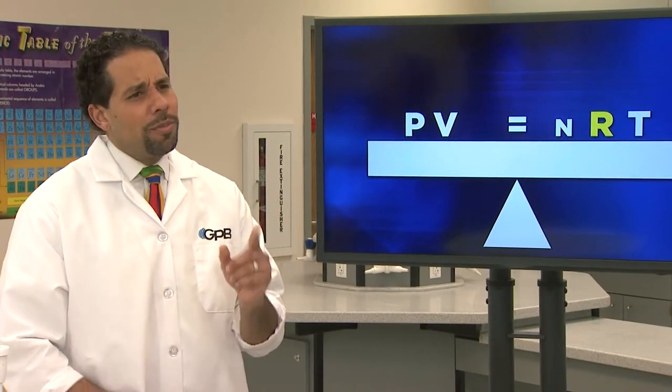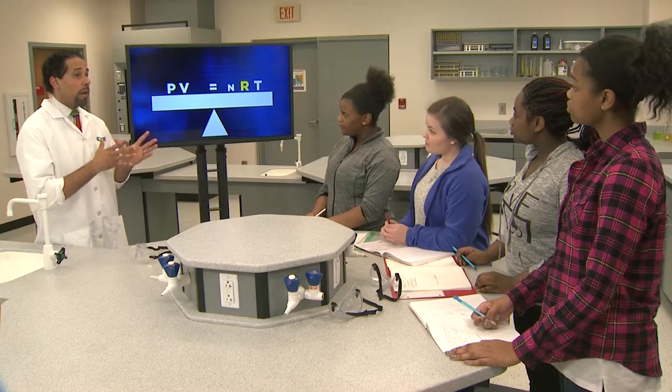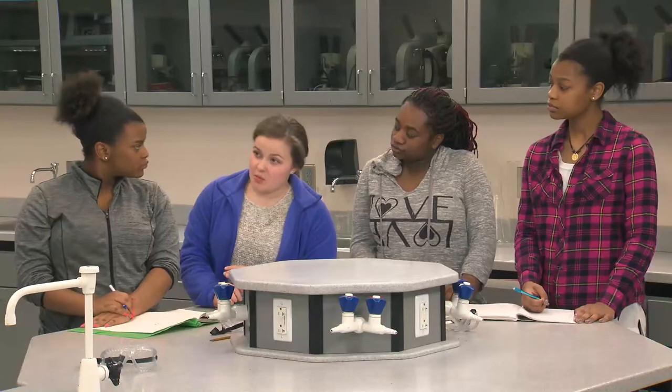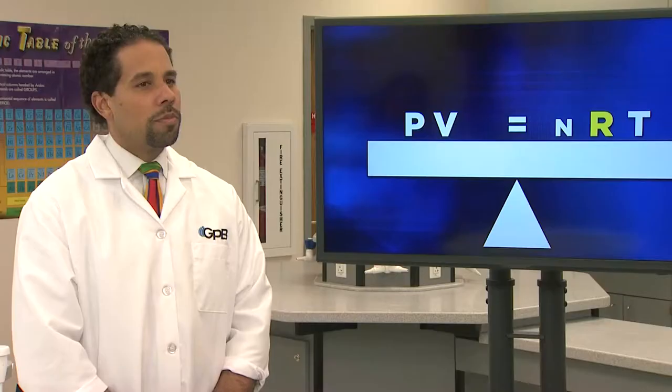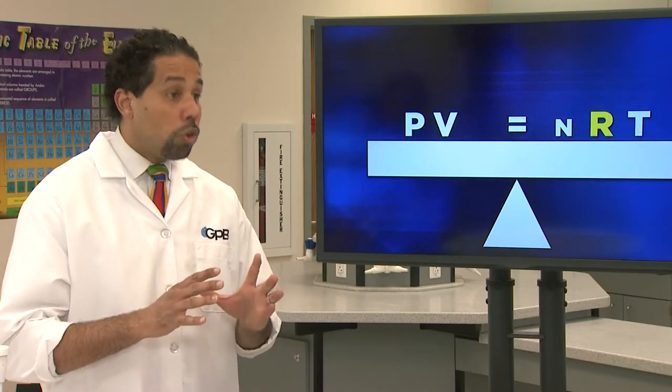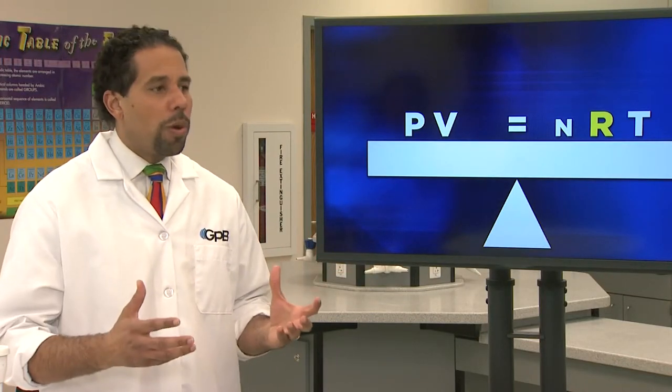Can you think of a real-life example showing the relationship between the amount of gas and the pressure it exerts? When I use hairspray, I'm using up the gas inside, so the pressure inside the container goes down. And when the pressure gets too low, you won't be able to spray anything else out. Now let's see if you can make more predictions based on the ideal gas law.